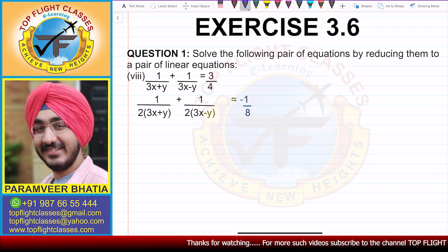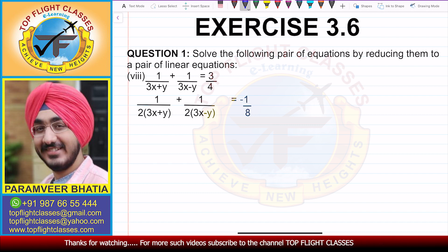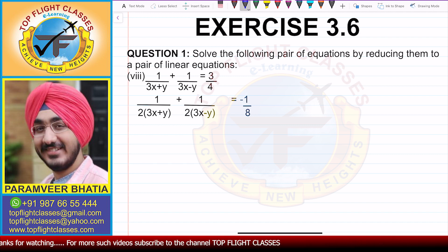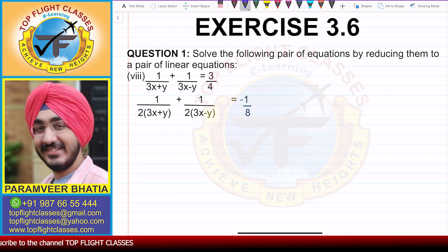In this case the equations given to us are: first, 1 by (3x + y) plus 1 by (3x − y) is equal to 3 by 4; and second, 1 by 2(3x + y) plus 1 by 2(3x − y) is equal to minus 1 by 8.